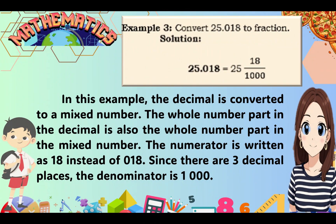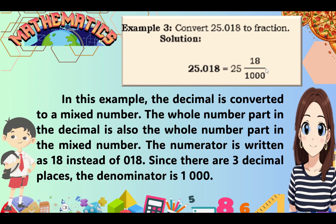Example number 3: Convert 25.018 to a fraction. In this example, the decimal is converted to a mixed number. The whole number part, which is 25, is also the whole number part in the mixed number. The numerator is written as 18. Since there are 3 decimal places, the denominator is 1,000. So 25.018 is equal to 25 and 18 over 1,000.